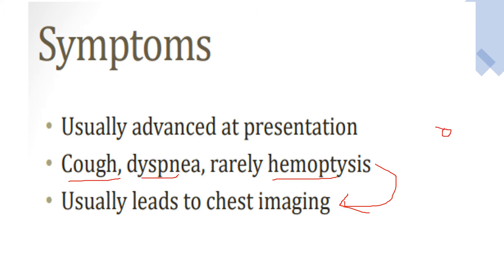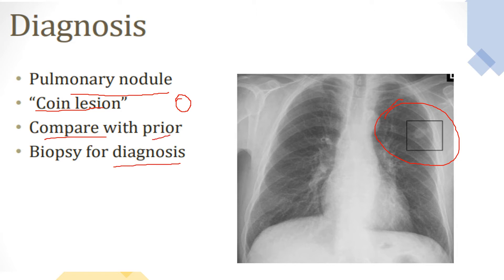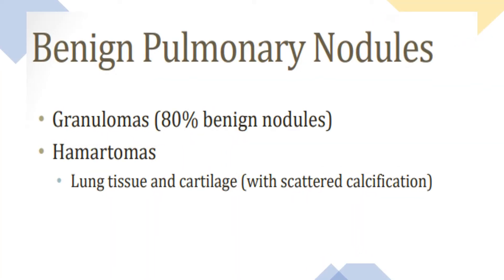The main finding that raises suspicion of lung cancer is a pulmonary nodule, also called a coin lesion because of its round coin-like appearance on imaging. However, most of these nodules may be benign, so you need to compare with a previous X-ray and take a biopsy to confirm whether it is benign or malignant.